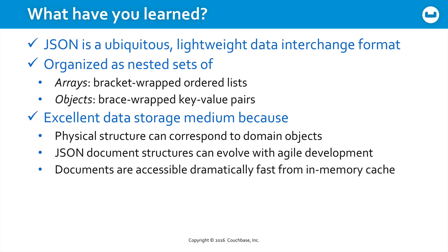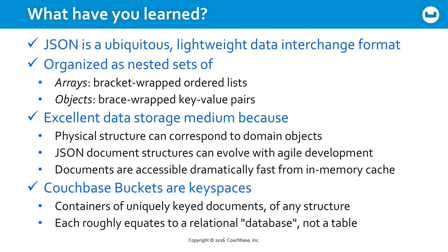Because Couchbase evolved directly from in-memory caching systems, these documents are accessible extremely fast. We also learned that Couchbase buckets are keyspaces — containers of uniquely keyed documents of potentially any structure. Each of these buckets roughly equates to a relational database, not a table. You have the functional equivalent of a table when you choose to work with documents of a generally similar format, although our querying language N1QL easily accounts for missing values and completely missing attributes. We've got a lot more to cover — stick around.